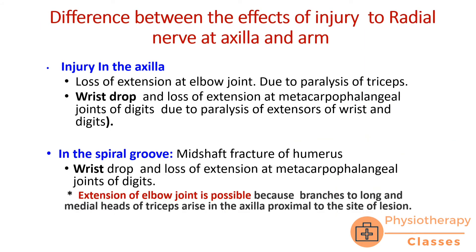Let us now see the difference between the effects of injury to the radial nerve at the axilla versus at the arm. If the injury occurs in the axilla, there will be loss of extension at the elbow joint, due to paralysis of the triceps muscle, which is responsible for extension at the elbow joint. There will also be wrist drop and loss of extension at the metacarpophalangeal joints of the digits.